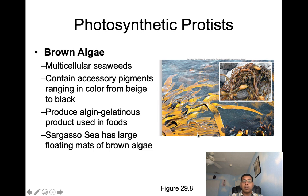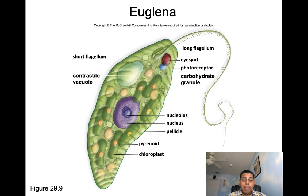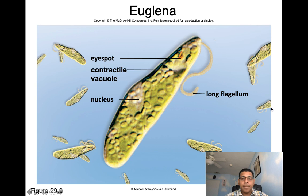Euglena are freshwater, single-celled organisms. Many have chloroplasts but some do not. They have two flagella — a short flagellum and a long flagellum. Here we can see one underneath the microscope.